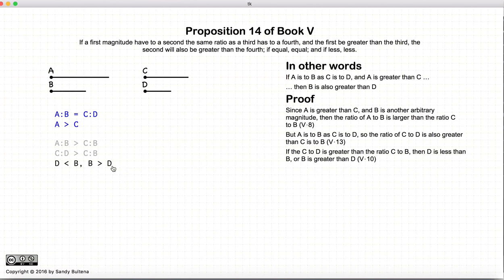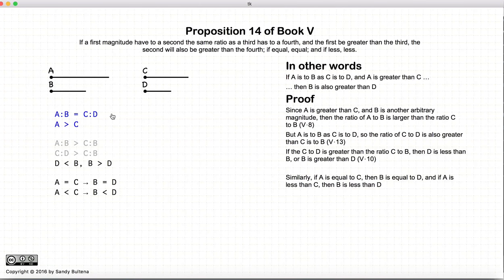So that is the first part of this Proposition. Now Euclid leaves it to the reader to follow the same steps here to show that if a is equal to c, then b is equal to d.